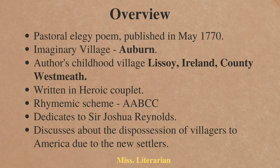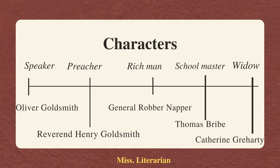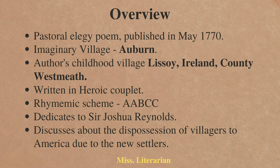Let us see the characters included in this poem. First is Oliver Goldsmith. Second is Reverend Henry Goldsmith, who is a preacher in the village. This character represents Oliver Goldsmith's brother. Next is a rich man who is projected as a tyrant — a cruel ruler who has complete power over the people in the village.